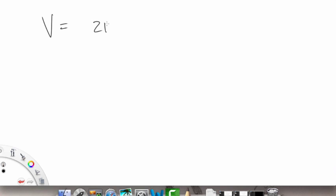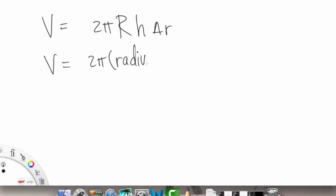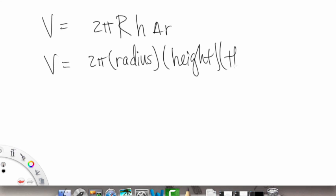The volume of the cylindrical shell is equal to 2π times radius times height times Δr. In other words, we have 2π times the radius, times the height of our cylindrical shell, times the thickness of the shell.